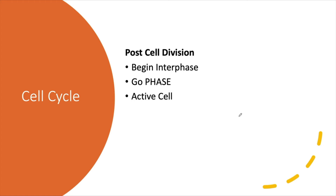We've made two daughter cells. What happens now? After cell division, each daughter cell begins the interphase of a new cycle. However, some cells — like heart cells, kidney cells, liver cells, and neurons — after remaining in G1 phase for some time, come out of the cell cycle and enter the G0 phase, or G sub-zero phase. This is also called the quiescent phase — meaning the cell is in a dormant or inactive state.